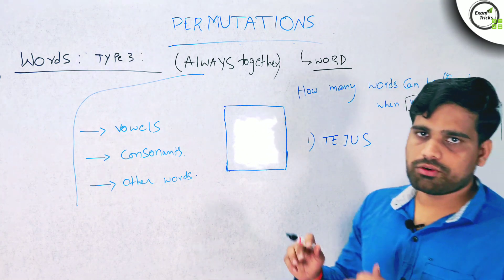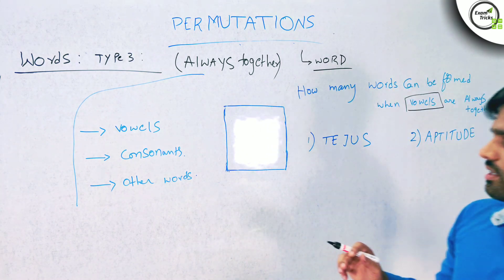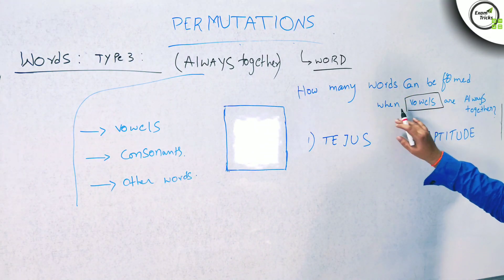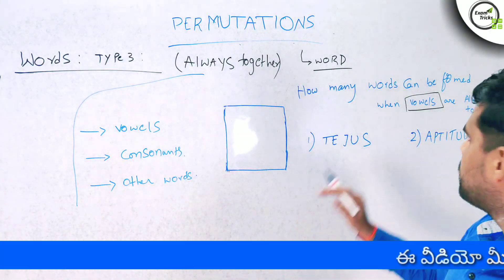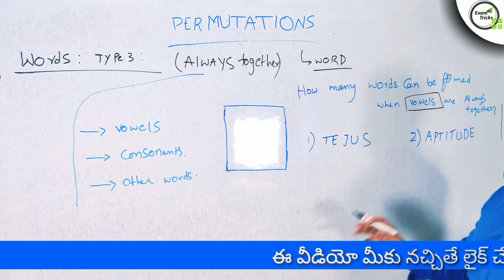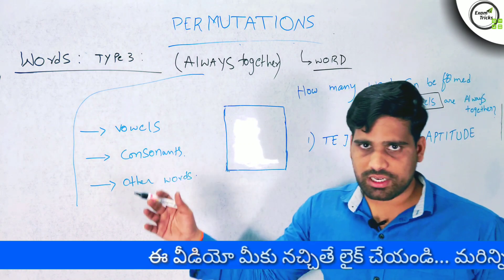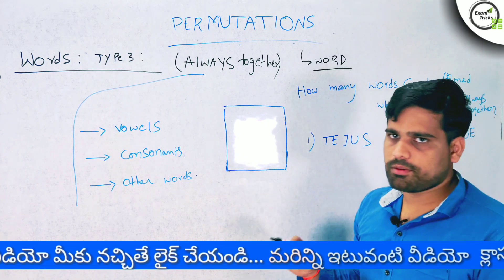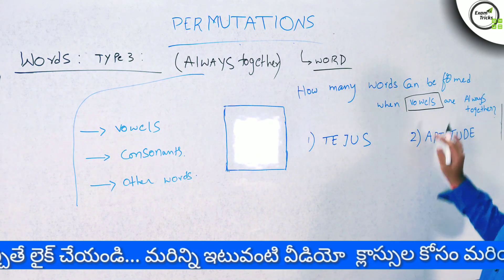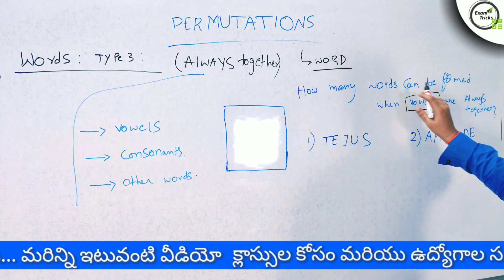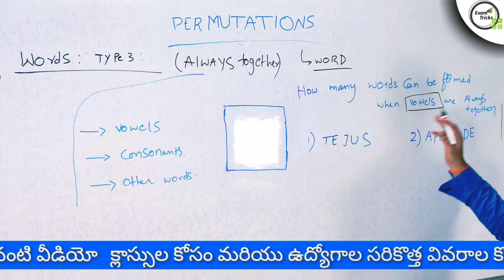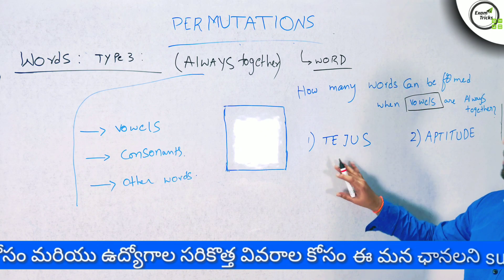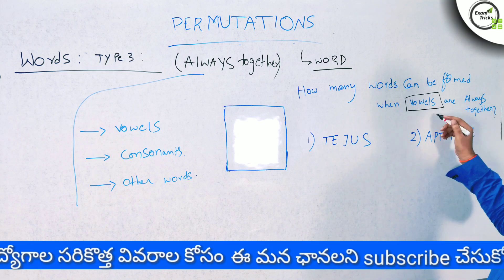We will form words. That is the first question. We will cover the model: how many words can be formed when the vowels are always together? And when the consonants are always together? If there are two particular letters, we will cover it in detail.